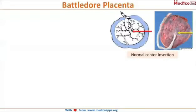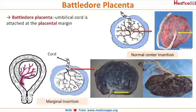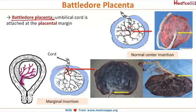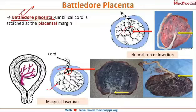As we can see in this diagram, there is central insertion of the umbilical cord. Now if this umbilical cord is inserted on the margins of the placenta, then it is called a battledore placenta, and it derives its name from a game like badminton which uses a racket — this insertion of the placenta makes it resemble that racket.